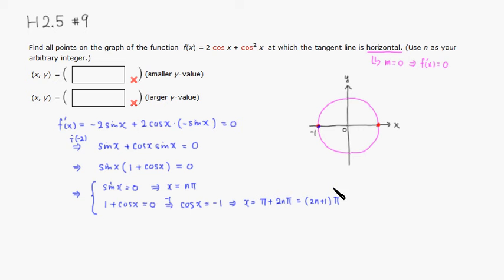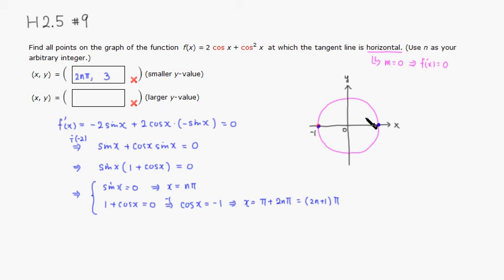Now let's plug in to find the corresponding y-values. When x = 0: cos(0) = 1, so f(0) = 2(1) + 1² = 3. So at x = 2nπ, the function value is 3. When x = π: cos(π) = -1, so f(π) = 2(-1) + (-1)² = -2 + 1 = -1.